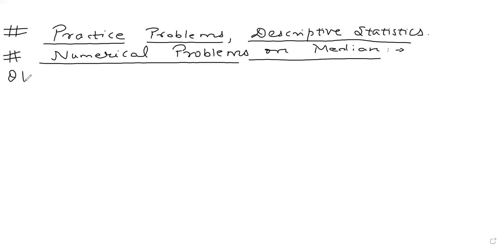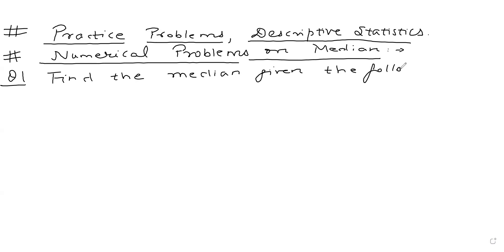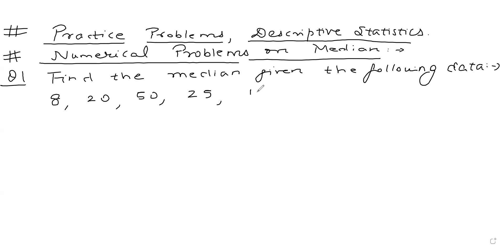Question number one: find the median given the following data. We are given some individual observations: 8, 20, 50, 25, 15, and 30.